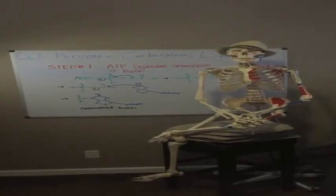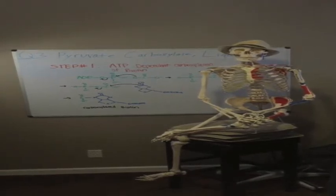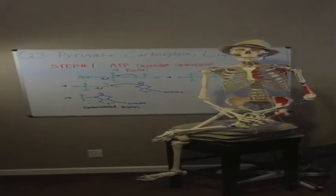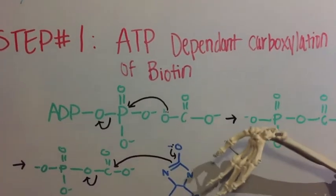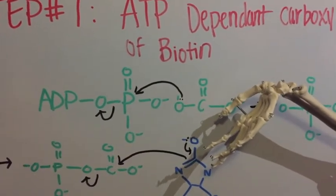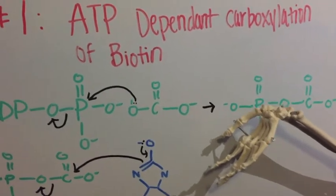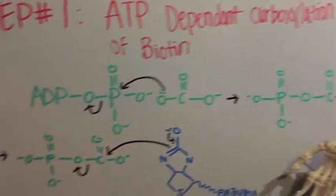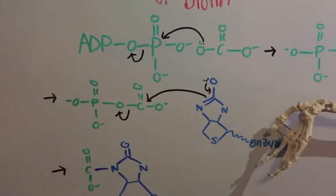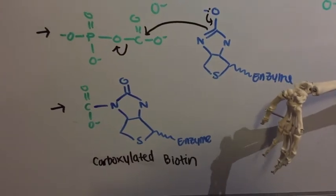Pyruvate carboxylase works in two steps to turn pyruvate into oxaloacetate. The first step is ATP-dependent carboxylation of biotin. Biotin is a group within the enzyme that holds on to the carboxyl group — and this is what it looks like. We start with ATP, that's ADP with a phosphate added, and bicarbonate. These react together to form a carbonic phosphoric anhydride. This molecule then reacts with the biotin group in the enzyme, and the end result is a carboxylated biotin. This is the end of step one.